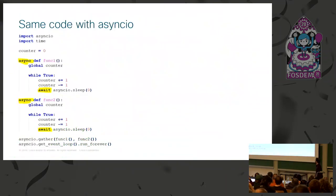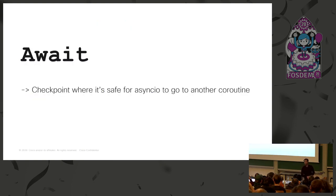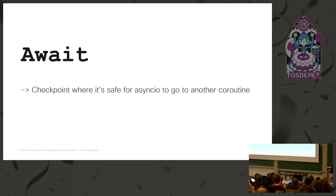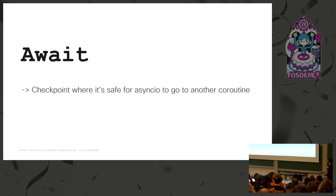When you execute this script you always print zero — that's what you get. The await keyword means it's a safe place for one coroutine to move to another coroutine. That's basically it.